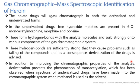In underivatized drugs, three hydroxyl moieties are present in 6-O-monoacetyl morphine and codeine. These form hydrogen bonds with the analyte molecules and adsorb strongly onto the various components of the gas chromatographic system. These hydrogen bonds are sufficiently strong that they cause problems such as tailing of the compound, and as a consequence derivatization of the drug is advised.